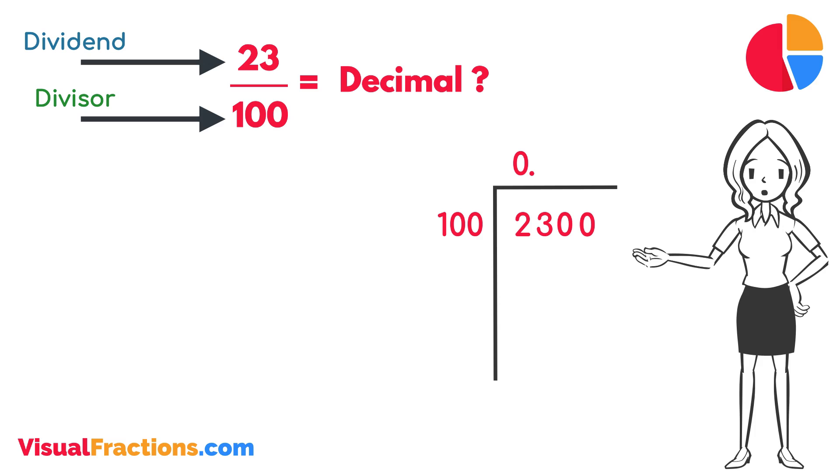How many times does 100 go into 2,300? Exactly 23 times. We write 23 after the decimal point in the quotient, making it 0.23.